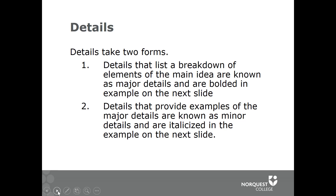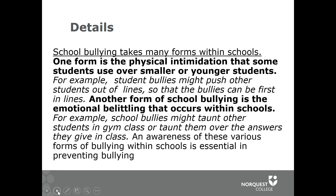Details that provide examples of major details are known as minor details and are italicized in the example on the next slide. Here's the example — back to the paragraph on school bullying. You can see the bolded ones are 'one form' and 'another form.' The minor details are examples of the physical intimidation and an example of emotional belittling that occurs.